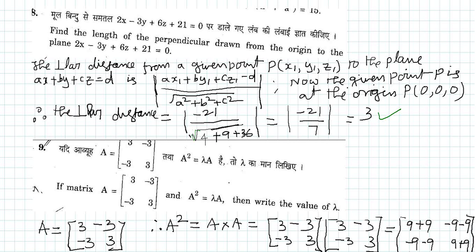Let us do problem number 8. Here we have to find the perpendicular distance from the origin to the plane 2x minus 3y plus 6z plus 21 equal to 0.